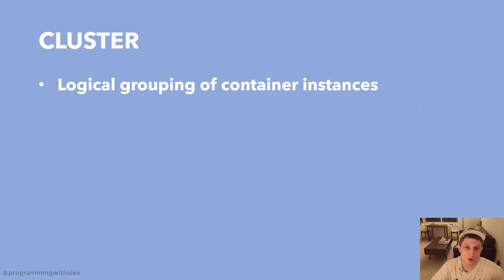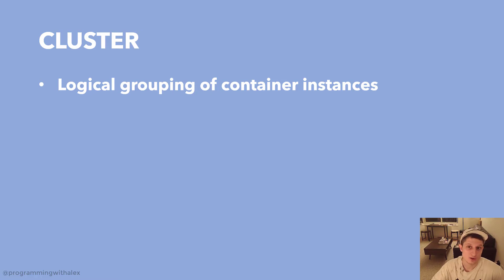Finally, we have the cluster, which is just a logical grouping of container instances — nothing too complex. It holds the services, which hold the EC2 instances, which hold the tasks. That's it for this video. I wanted to walk through with diagrams how the different components of ECS work together so we have a better frame of reference. In the next video we're actually going to set up these components in the AWS Management Console and get them running. If you have any questions, just leave a comment below and I'll respond as quickly as I can. Thanks for watching and stay tuned for more.